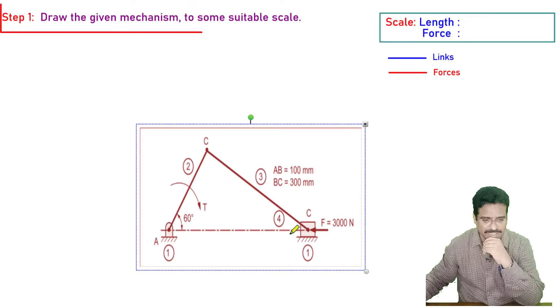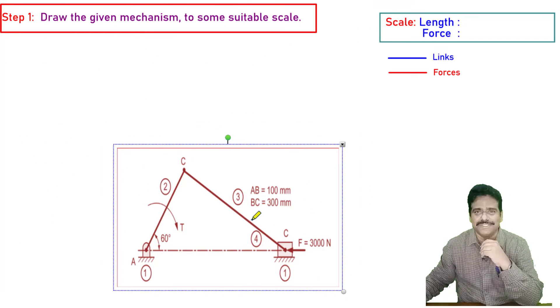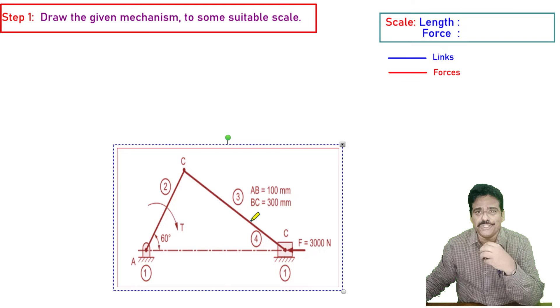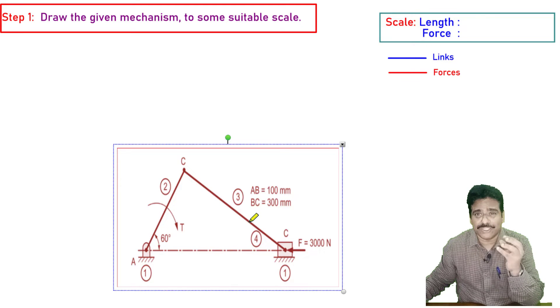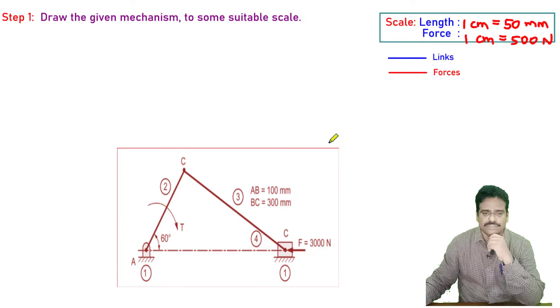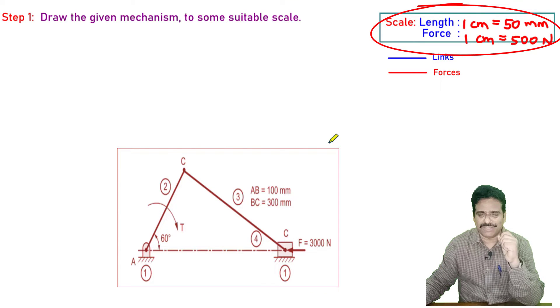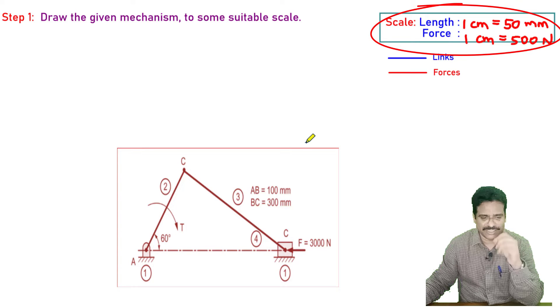What is step number one? This is the typical mechanism given. We are going to reproduce, redraw the diagram geometrically using some suitable scale. I take the scale one centimeter equal to 50 millimeters for length, then for force I am taking one centimeter equal to 500 Newton, based on the given dimensions.